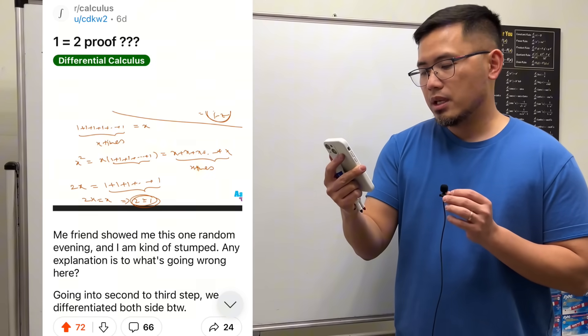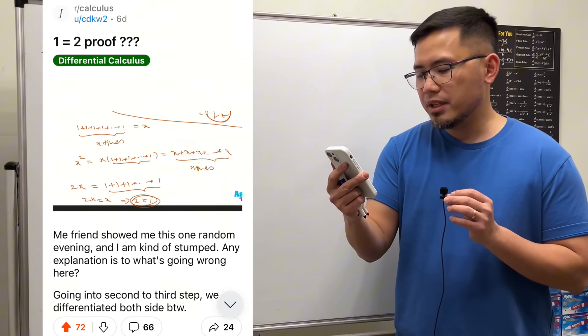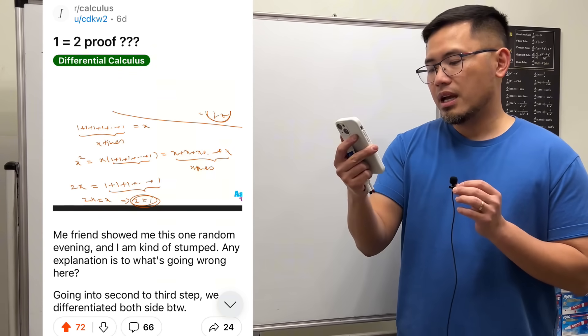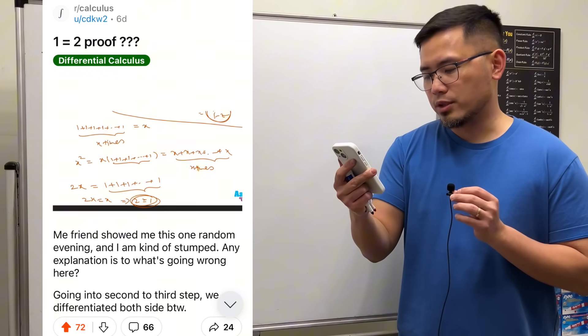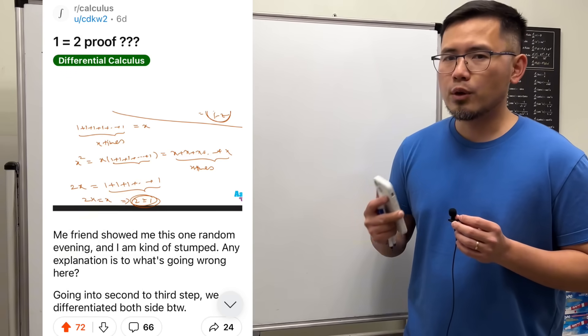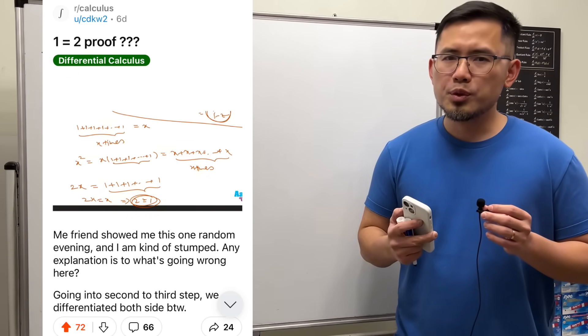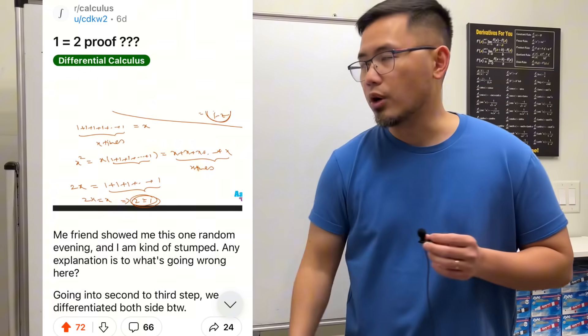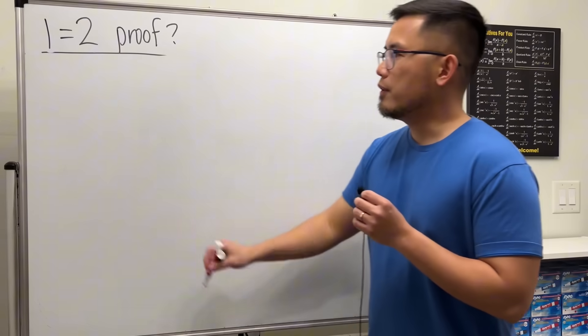1 is equal to 2 proof. My friend showed me this one random evening and I'm kind of stumped by it. Any explanation as to what's going wrong here? Okay, this right here is a very well-known false proof for 1 is equal to 2, and we'll be using calculus derivatives to do so.